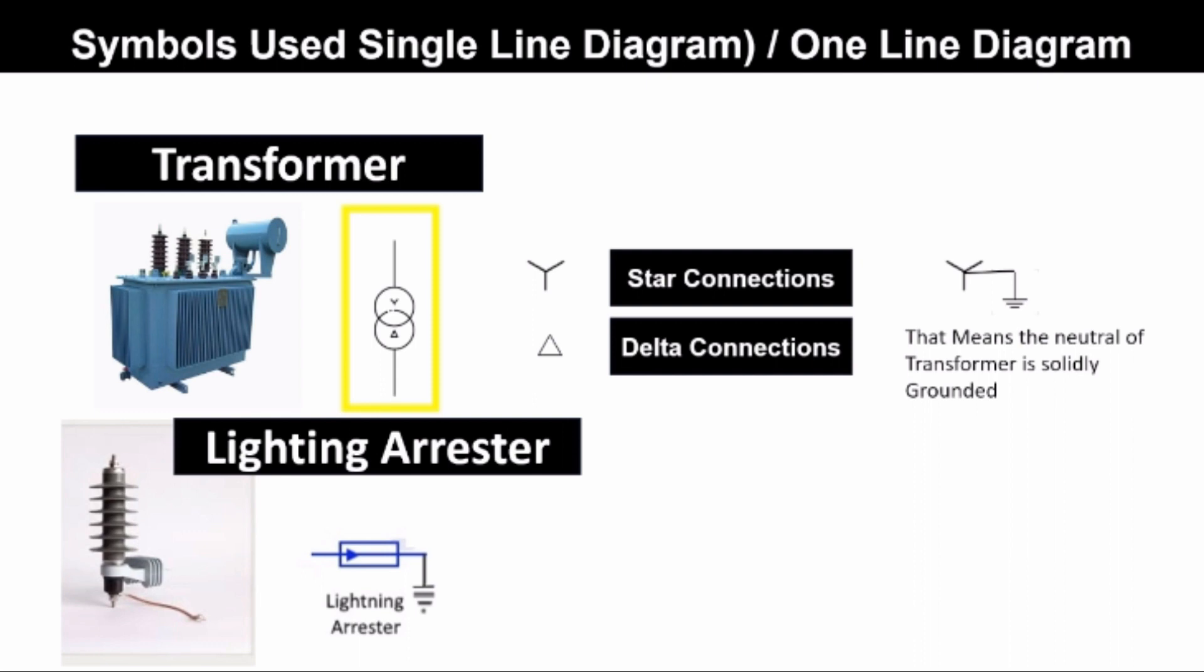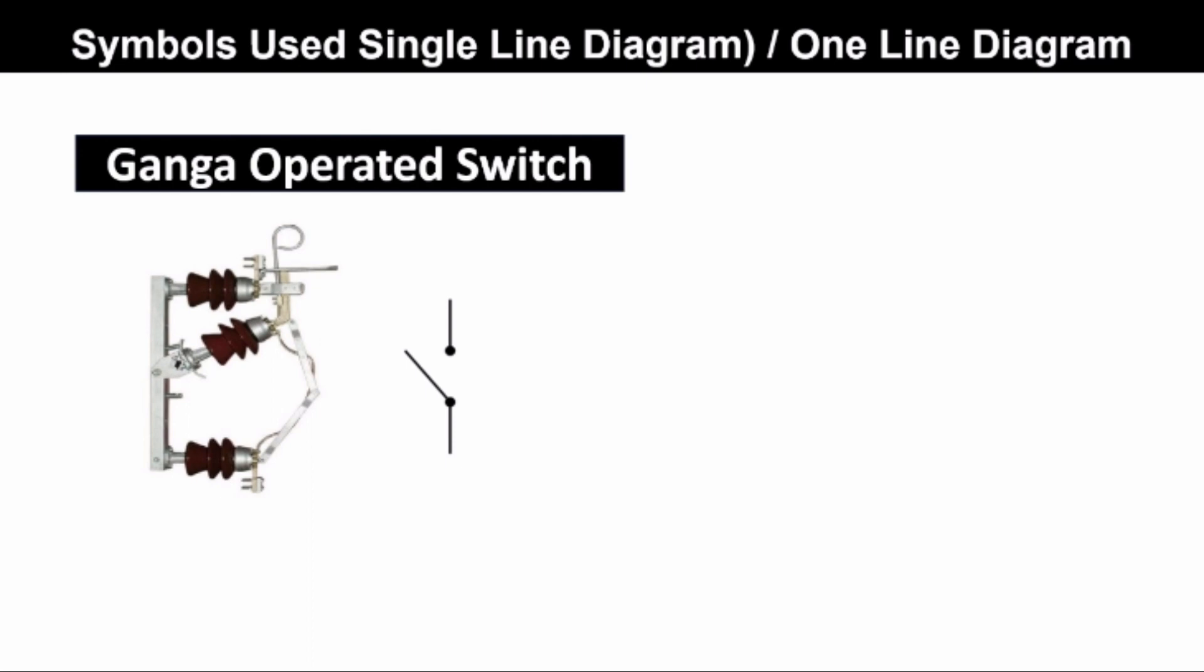This is the lightning arrestor and its symbol is this. This is a gang operated switch or GEO switch and its symbol is this.